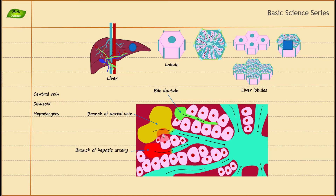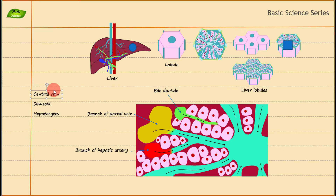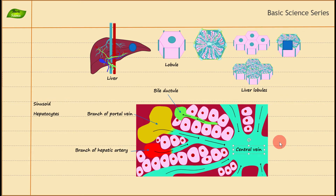You can see the flow direction for the blood—it is going from the peripheral region toward the central region. For the bile, the flow is in the opposite direction. Let me first label the central vein here—so you have the central vein in the center of the lobule.